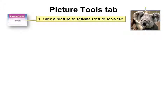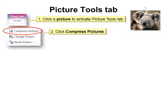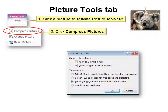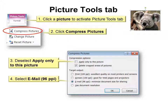Then click on a picture to see the Picture Tools tab. Then go to Compress Pictures — there are two options you want in there. First, deselect 'Apply Only to this picture,' and then select 'Email' at 96 pixels per inch, and then click OK.